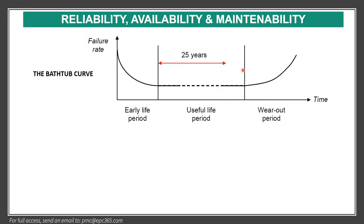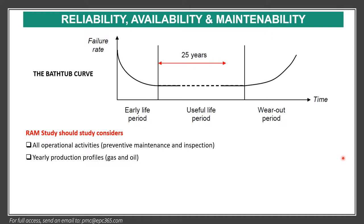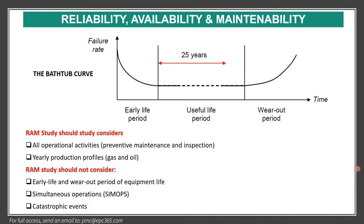For example, 25 years — during this area we will do the study. RAM study should consider all operational activities, preventive maintenance and inspection, and yearly production profile for gas and oil. It should not consider this early life part of the bathtub curve, nor the wear-out period.